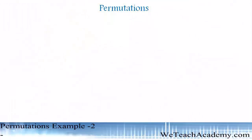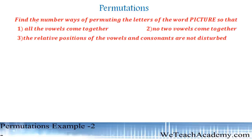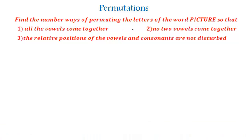Hello friends, welcome to VTCH Academy. Today we are going to solve an example on permutation. We have to find the number of ways of permuting the letters of the word PICTURE so that: all the vowels come together, no two vowels come together, and the relative positions of the vowels and consonants are not disturbed.